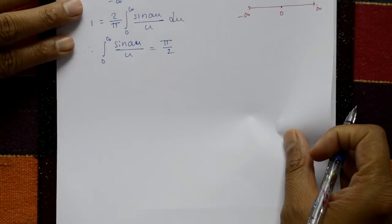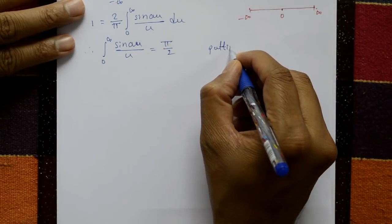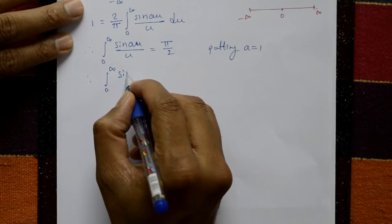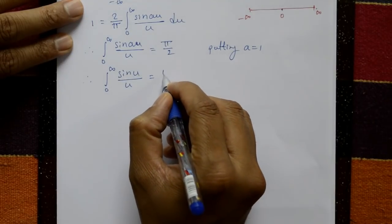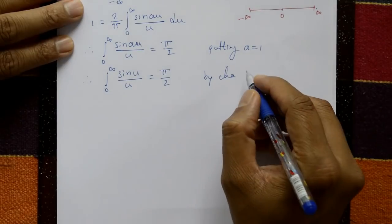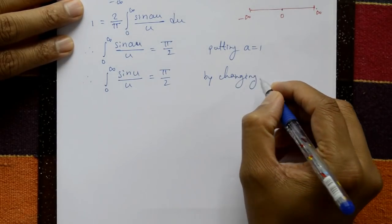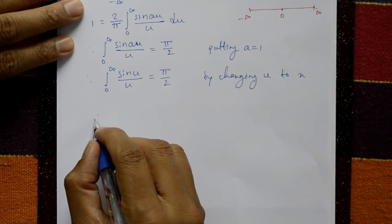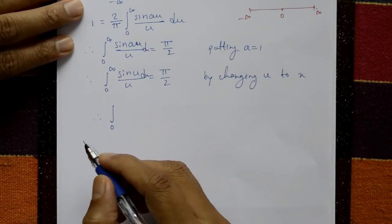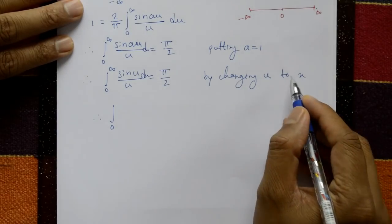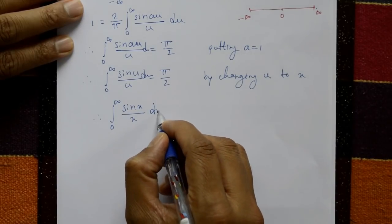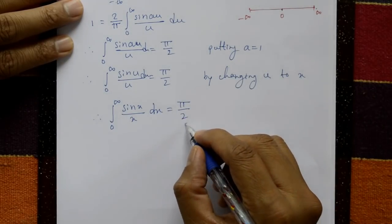Putting a = 1, the integration from 0 to infinity of sin(u)/u with respect to u equals π/2. Changing the variable u to x, therefore the integration from 0 to infinity of sin(x)/x dx equals π/2. This is the required answer.